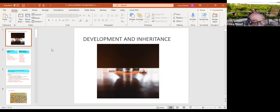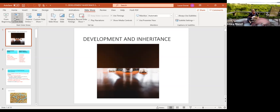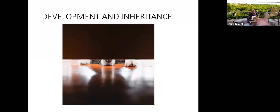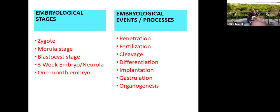We're going to cover fetal development and inheritance. We covered the reproduction system in the last chapter, and now we're going to look at what happens upon fertilization and subsequent development.